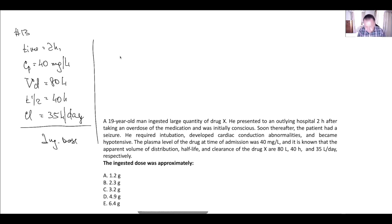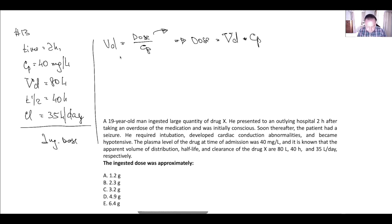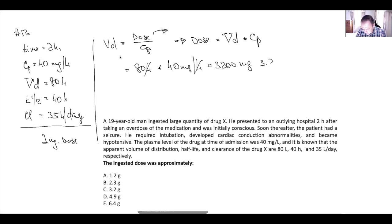We can use the equation for volume of distribution: dose equals plasma concentration times volume of distribution. This ingested dose is calculated the same way as a loading dose. It will be volume of distribution multiplied by plasma concentration: 80 liters times 40 milligrams per liter, which gives 3200 milligrams — or 3.2 grams — because the liter units cancel.